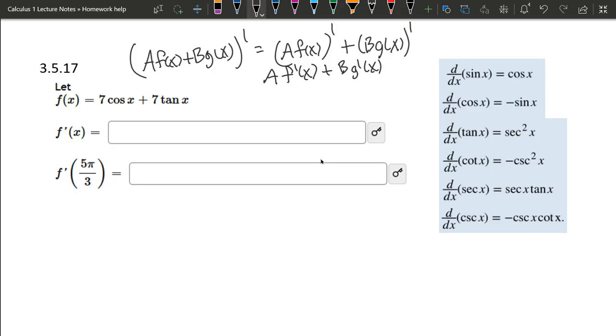Alright, so let's go ahead and apply the rule here. I'm going to rewrite our original function f: 7 cos x plus 7 tan x.